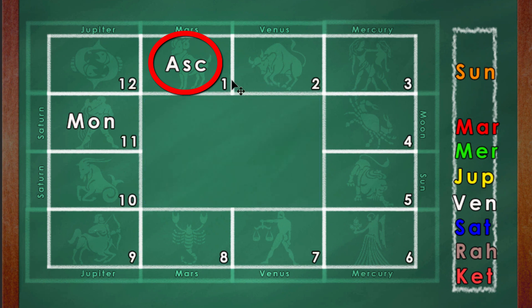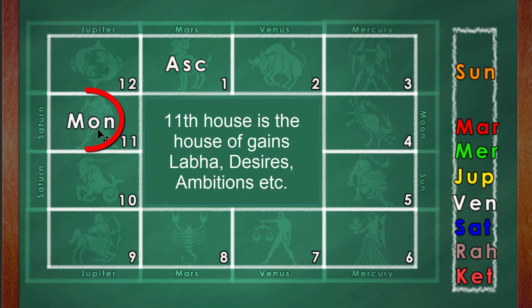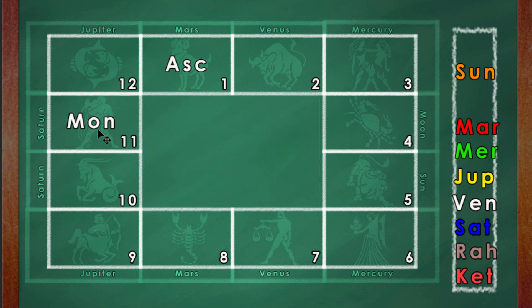So this is how the numbering is done — clockwise 1, 2, 3, 4 from the ascendant as the first house, and therefore you find the moon in the 11th house. The 11th house is the house of fulfillment of desires, the house of gain, Labhasthana, and it's very good to have planets in the 11th house. The 11th lord is a functional malefic, a bad planet, but planets in the 11th is very good and promotes gain, except in one or two cases which you are going to see as we go through the 12 possibilities.